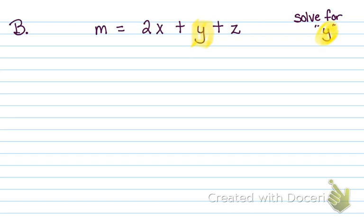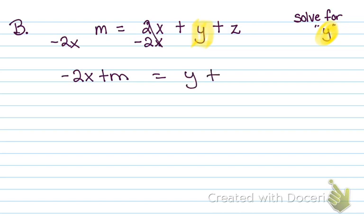We have a positive 2X and then we have a positive Z. We want to move these things over away from Y — we want Y all alone, so we're going to do one thing at a time. So minus 2X on both sides. I can't combine it with M because they're not like terms. So right now I have negative 2X plus M equals Y plus Z.